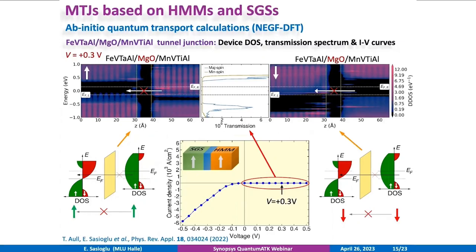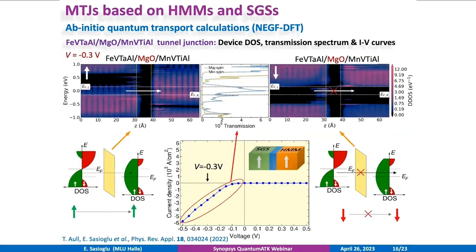This behavior can be explained by the device density of states presented for spin-up and spin-down channels for a bias voltage of 0.3 volts, as well as the transmission spectrum. In the spin-up channel, the tunneling of electrons from the right half-metallic electrode into the left spin-gapless semiconductor electrode is not allowed due to the spin gap in this channel. Similarly, the spin-down channel of the half-metallic electrode shows insulating behavior. As a consequence, the transmission spectrum is zero for both spin channels for forward or positive bias voltages. In the case of a reverse bias, the magnetic tunnel junction is in the on-state. In the spin-up channel, tunneling from the left spin-gapless semiconductor electrode into the right half-metallic electrode is allowed. However, in the spin-down channel, both materials have a gap, and therefore tunneling is not possible. As a result, the on-state current in the magnetic tunnel junction is fully spin-polarized.